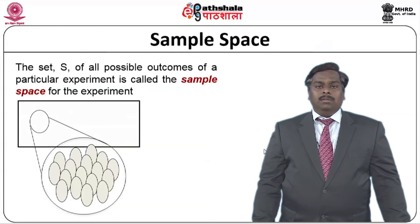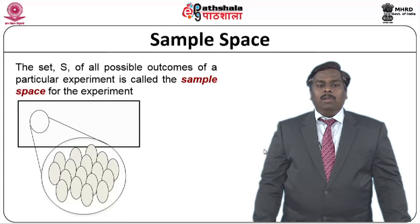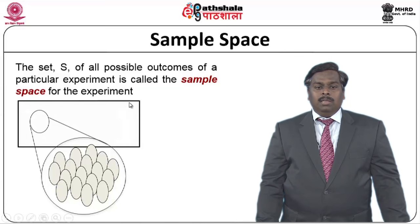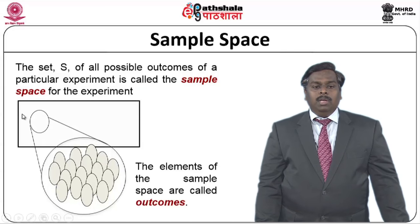To understand this, we should know what is a sample space. Suppose we have a set S which highlights all possible outcomes of a particular experiment — that set S is said to be a sample space for the experiment. From this diagram, the area indicated by the box represents all possible outcomes, and the circle indicates the set of possible outcomes associated to the given sample. The elements of the sample space are called outcomes.